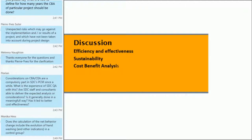To interpret the results, we can compare with other studies from other countries — for example, a study in Burkina Faso that had a similar approach — and then compare specific elements such as rural versus urban and households versus schools. The discussion covered efficiency, effectiveness, sustainability, and also how could a cost-benefit analysis be done if we want to go one step further in this direction.